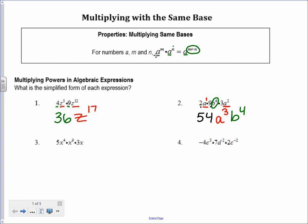Number 3 — I start the same way, by multiplying the numbers: 5 times 3 is 15. Now I deal with the variables. I only have x's here. The exponents on those x's are 4, 9, and 1. When I add 4 plus 9 plus 1, I get x to the 14th.